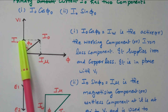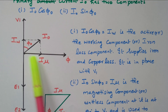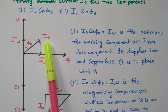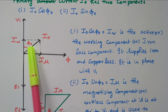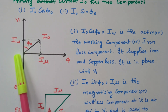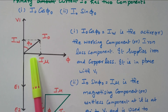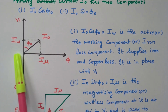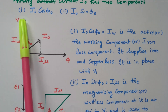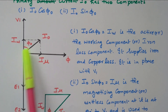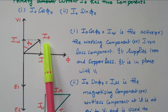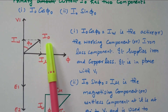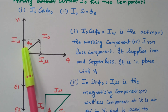The applied voltage and the vector sum of these two currents gives the total current at an angle phi0. The magnetizing current is in phase with the flux; the working current is in phase with the voltage. The vector sum of these two is nothing but the primary current I0, so this angle is phi0.